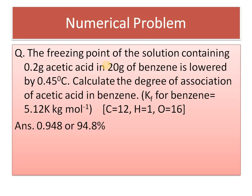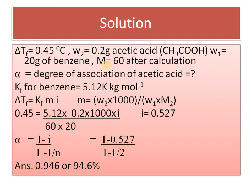Next numerical is regarding association. Acetic acid in benzene undergoes association, not dissociation. The freezing point of the solution is given, along with the mass of acetic acid (solute) and mass of solvent 20 grams, and Kf is given. From ΔTf = Kf·m·i, calculate i, which comes out to be 0.52. Since i < 1, association takes place. Then apply the association formula: alpha = (1 − i)/(1 − 1/n) where n = 2, to find alpha.